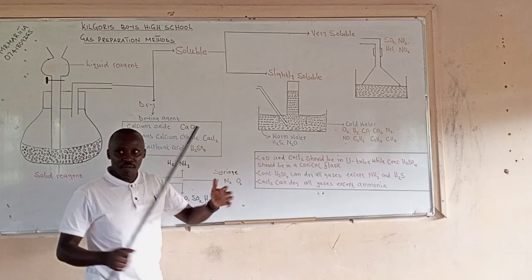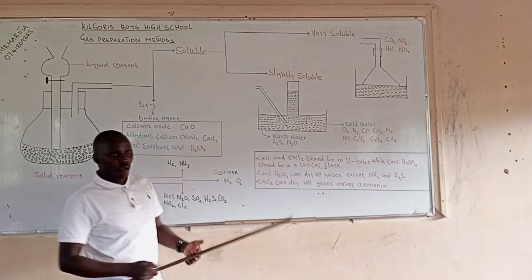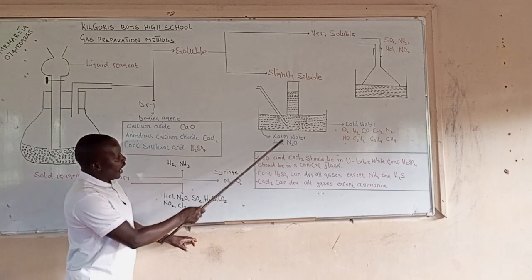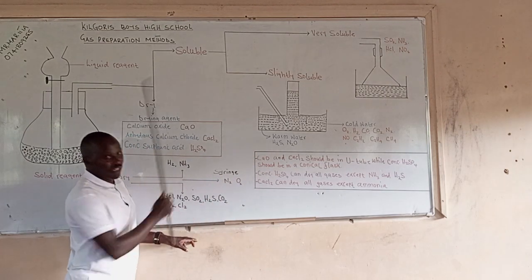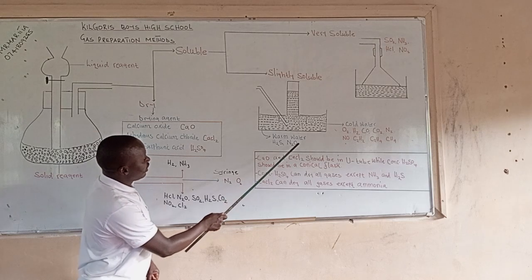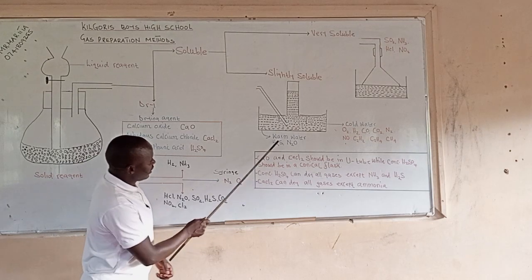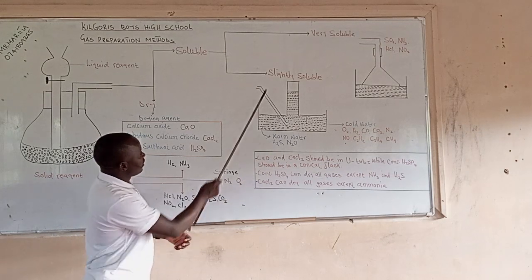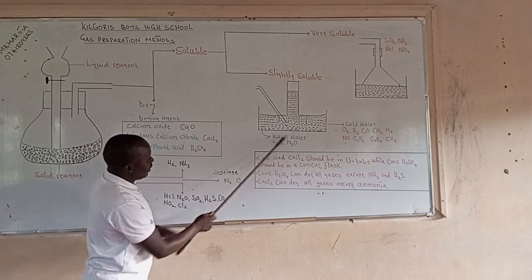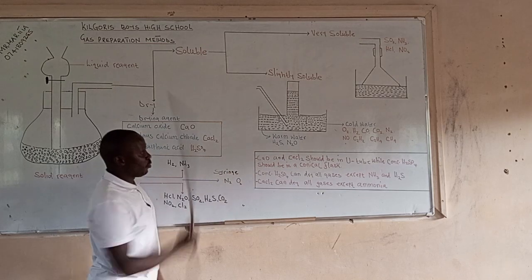We have some gases which are collected over warm water. Over warm water we have hydrogen sulfide gas and nitrogen dioxide gas. These gases are slightly soluble in water and therefore they are collected over warm water.